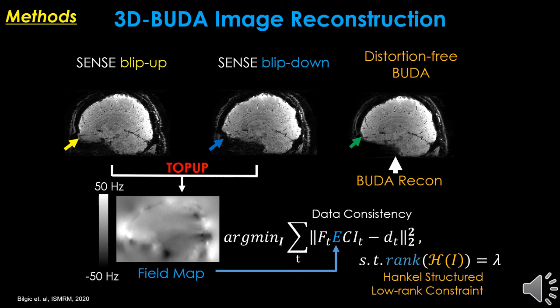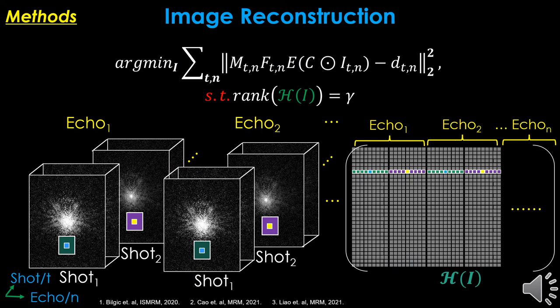For conventional 3D BUDA image reconstruction, blip-up and blip-down shots were reconstructed by SENSE individually. Then a field map was generated using top-up with the interim SENSE results. Then all this information was incorporated into the BUDA forward low-rank image reconstruction model to produce the distortion-free 3D BUDA reconstructed image. In this work, we propose to use joint Hankel low-rank image reconstruction along both shot and echo dimensions, which can leverage similarity between echoes to improve the reconstructed image quality.